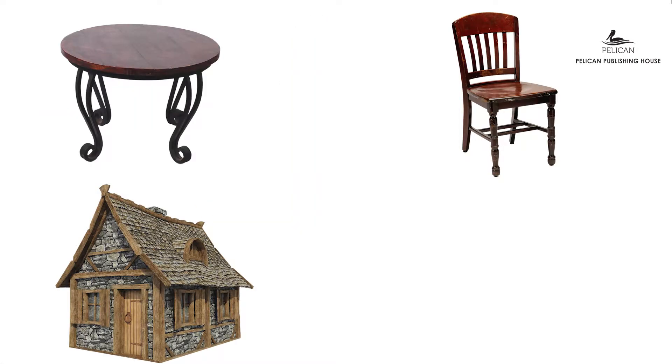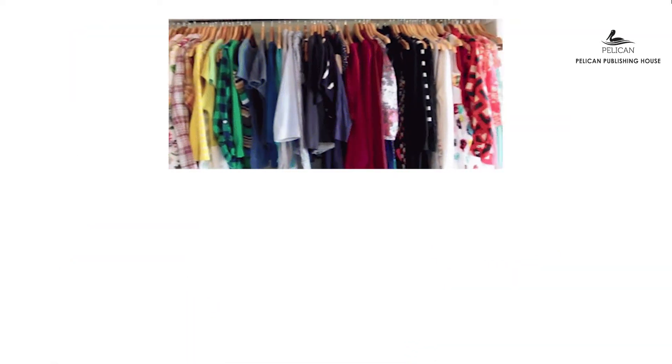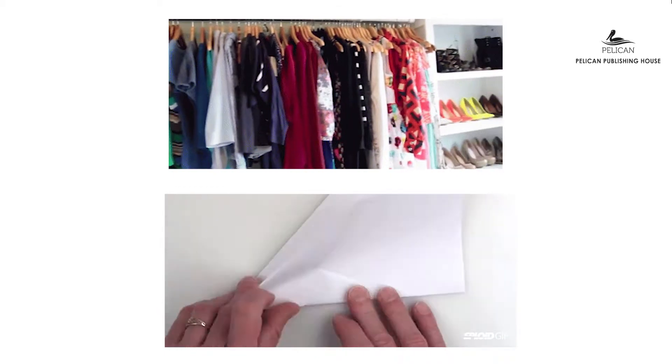Plants also help us by giving us wood. Wood is used for making various things like a table, a chair, a wooden house and boats. Plants also give us fiber. We make clothes and paper with fiber.